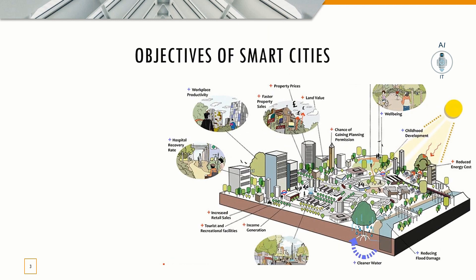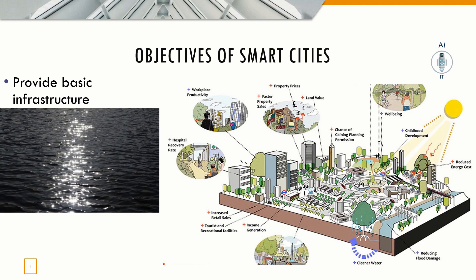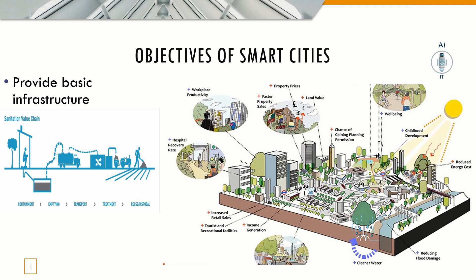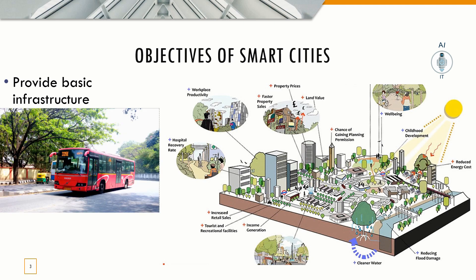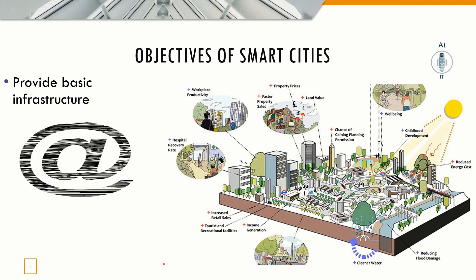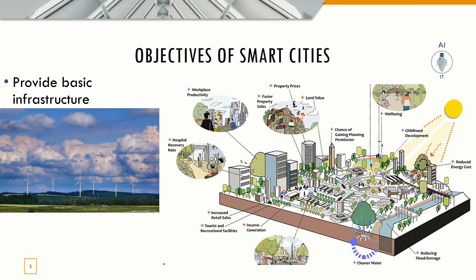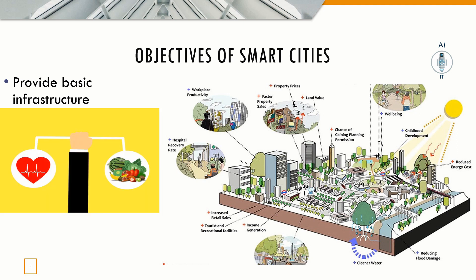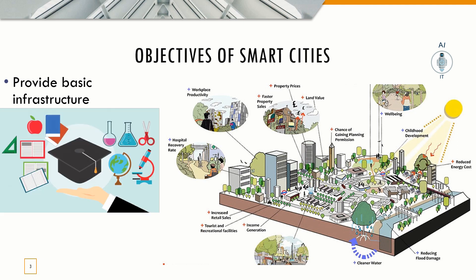What are the objectives of a smart city? The first objective is basic infrastructure, such as adequate water supply, assured electricity supply, sanitation, efficient public transport, affordable housing, good governance, sustainable environment, safety and security of citizens, and health and education.